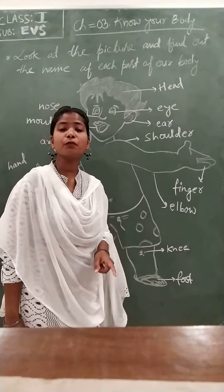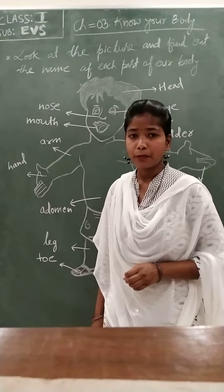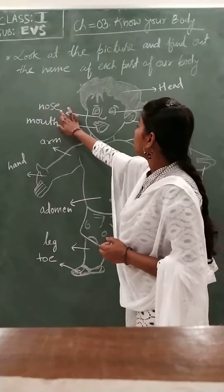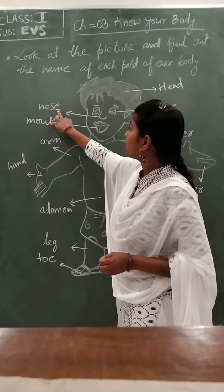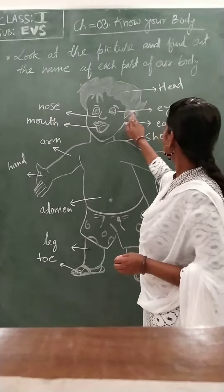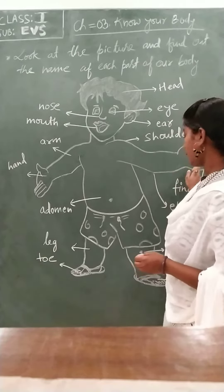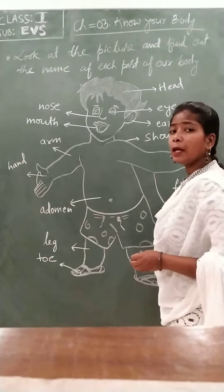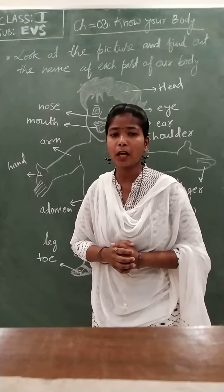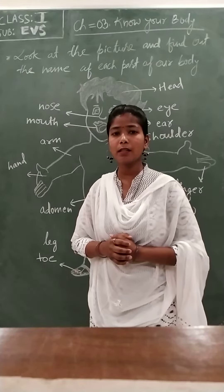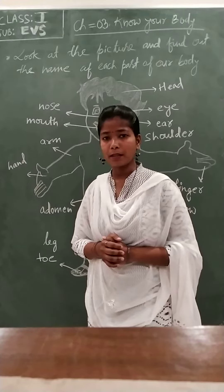Some body parts are very important in our life. Among these, nose, mouth, eyes, ear, and hand are important because they help us to know the things around us. They are called sense organs.